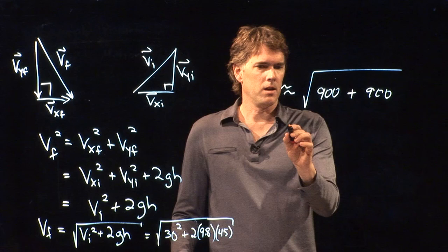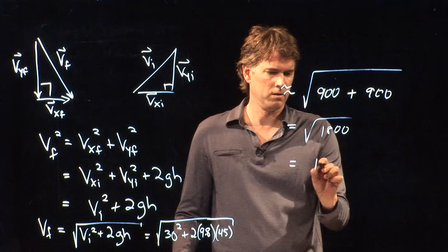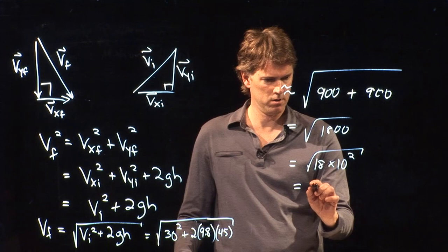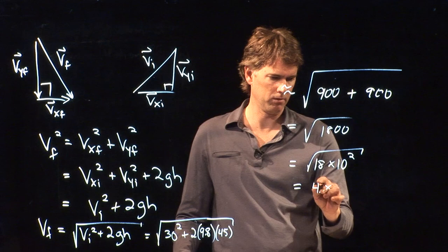And so that is 1800, which is 18 times 10 to the 2. And square root of 18 is a little bit more than 4. 4 point something, I don't know, 4.3.